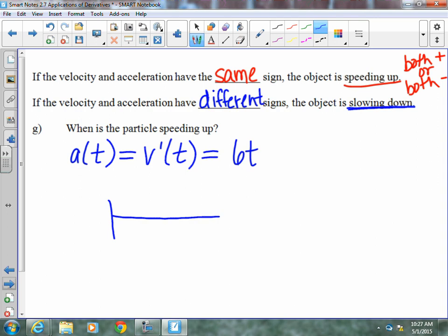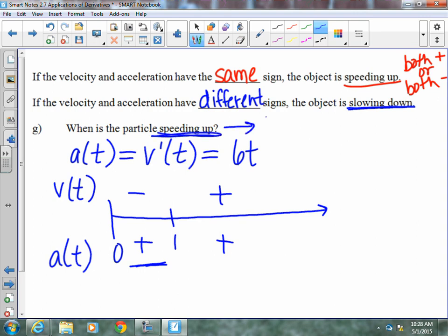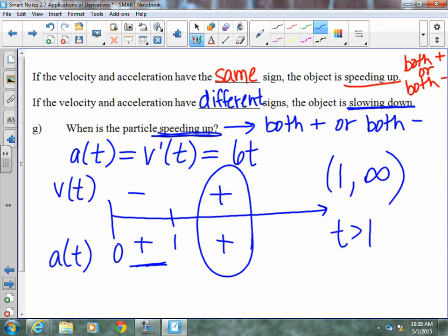We're going to look at the same number line. We know at 0 and 1 that our velocity was negative here and positive here. Acceleration, on the other hand, is 6t. When we plug in a point in this section between 0 and 1, we're going to get a positive value. When we plug in a number bigger than 1, 6 times the number larger than 1 is also positive. They want to know when is it speeding up? Speeding up means both positive or both negative. Same sign. Well, that happens here. So, we know that our particle is speeding up from 1 to infinity or when t is greater than 1 second.